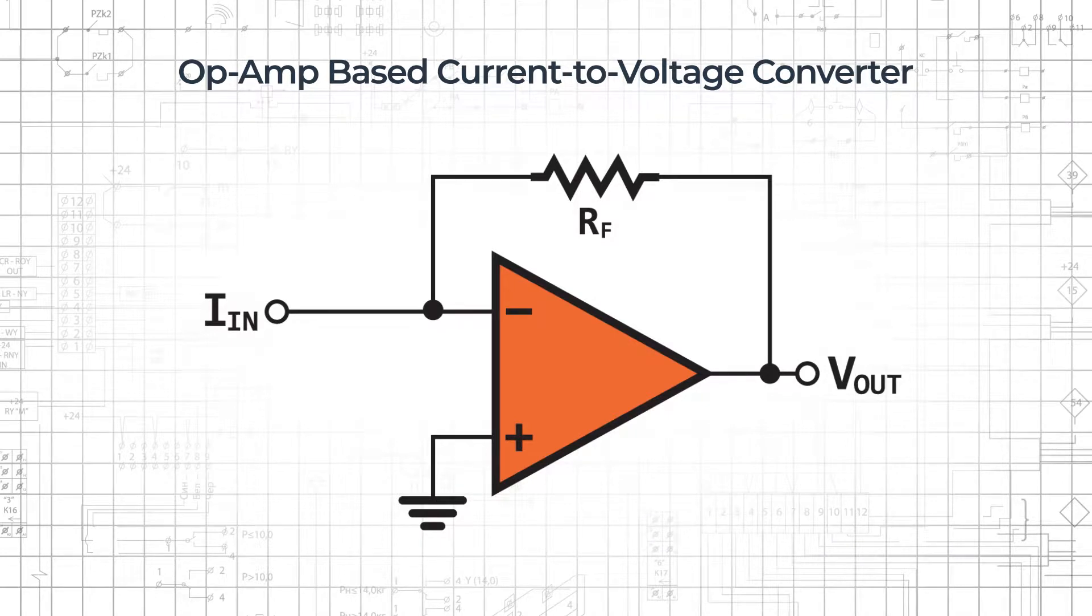This widely used circuit is a simple and effective means of converting the output of a current source into a typical voltage signal.